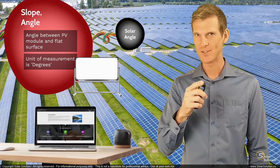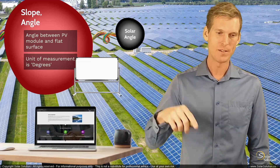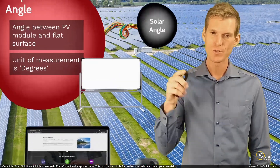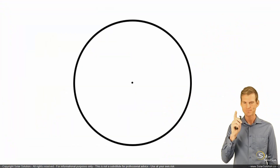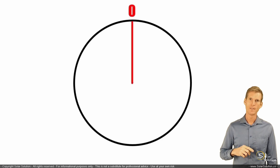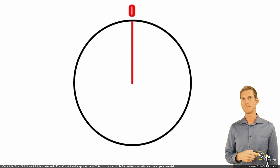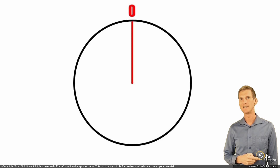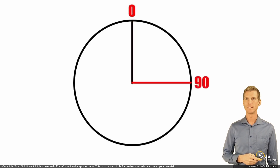And it's not degrees Celsius — just degrees. If you draw a circle with a dot in the middle and start at one point, normally at the top, you call this zero degrees. Then one quarter of the circle, or one quarter of pi, is 90 degrees. One exact quarter of a circle is 90 degrees.